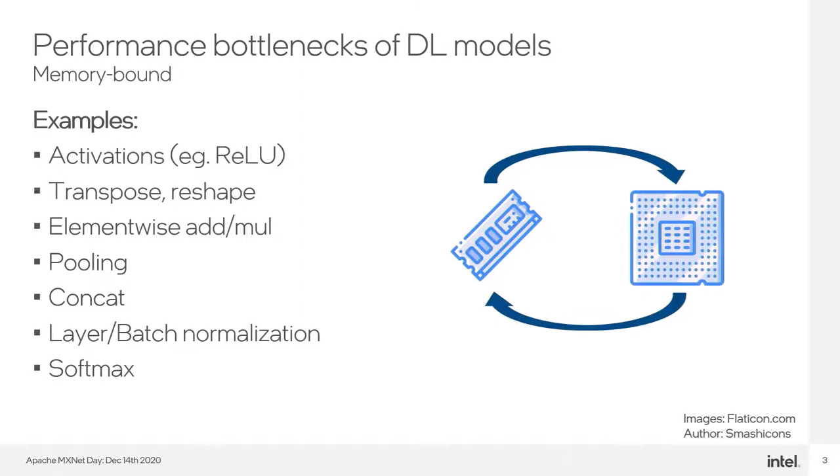We can divide performance bottlenecks of deep learning models into two main categories. The first group consists of memory bound operations. These are functions that don't require complex computations, but they mainly manipulate data or perform many simple calculations.